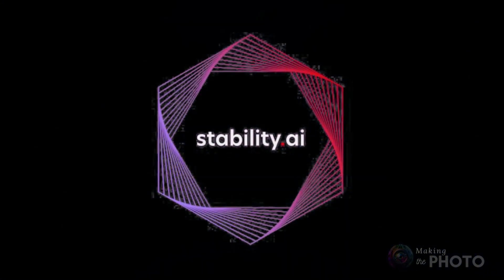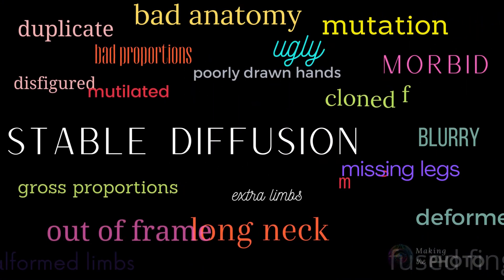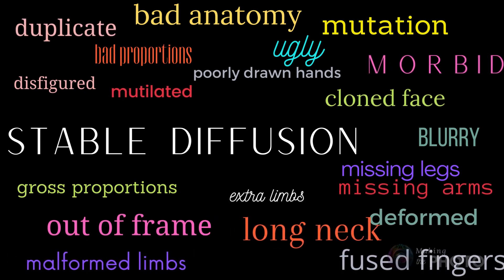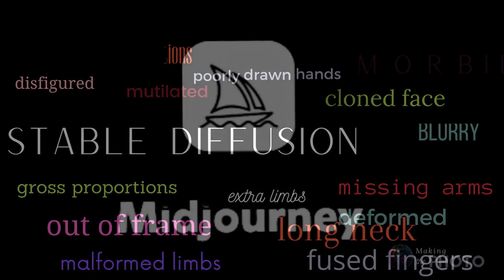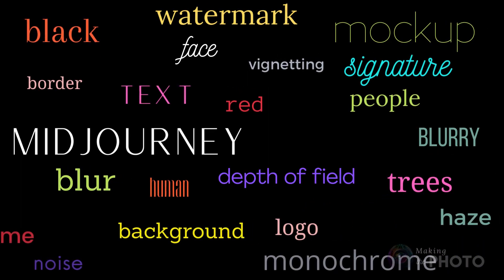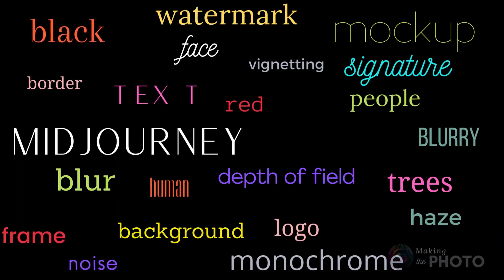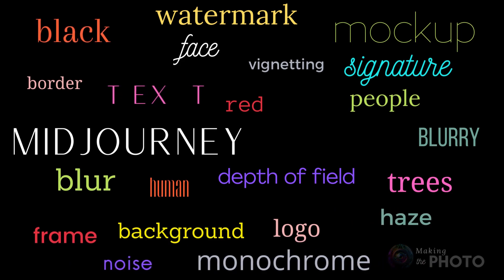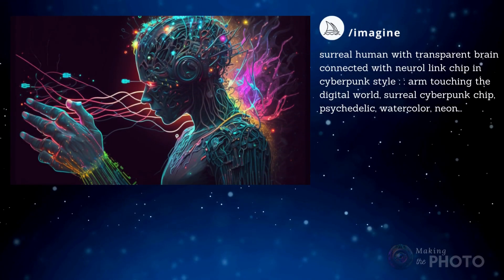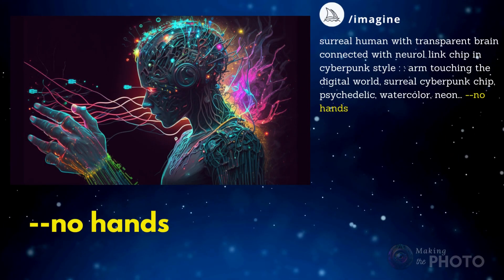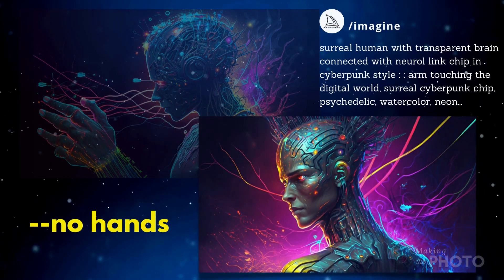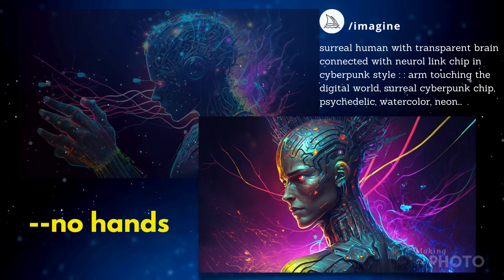In Stable Diffusion, most negative prompts try to counteract known problems with anatomy like face or hand distortions, but this isn't as much of an issue in Mid-Journey. Most Mid-Journey creators target elements of their image or composition. But if you're having a difficult time getting good hands or other anatomy, you can take a leaf out of the Stable Diffusion handbook and ask for no deformed hands, or no hands at all.